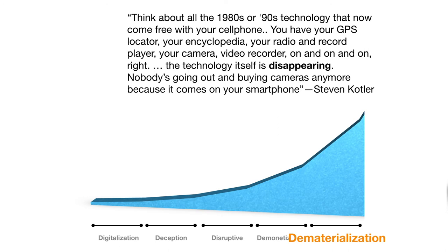The next D is dematerialization. We went from demonetization, where we were buying a small digital camera for a couple hundred dollars and no longer needed to buy film — taking the vast majority of the expense out of photography — to a point where we don't even carry around separate cameras anymore, except for specialized use. Our cameras, GPS systems, and more have all been amalgamated into our cell phones. The technology itself is disappearing; nobody is going out and buying cameras anymore because it becomes part of your smartphone.